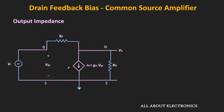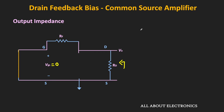Now let us find the output impedance, which is the Thevenin equivalent impedance seen from the output side. To find it, we consider all independent sources as zero, so the input voltage source acts as a short circuit, making Vgs = 0. With Vgs = 0, the dependent current source also becomes zero and acts as an open circuit. Therefore, the equivalent resistance seen from the output side is the parallel combination of RF and RD, giving Zout = RD ∥ RF.